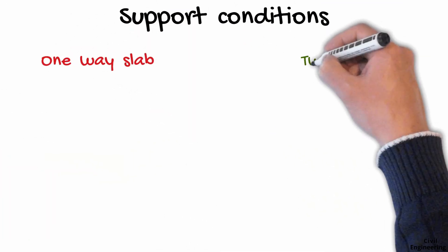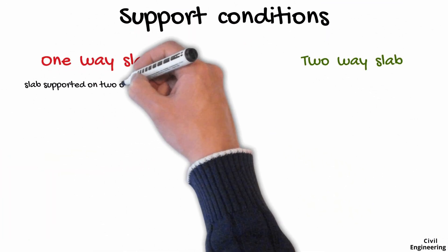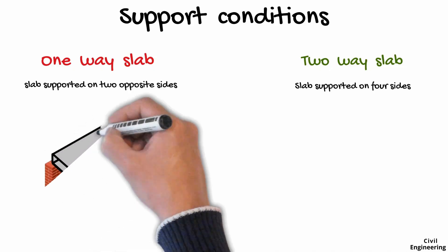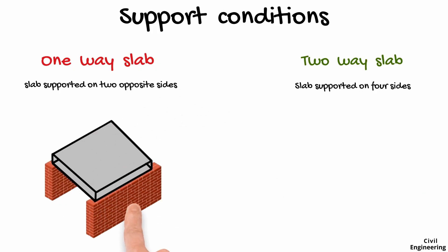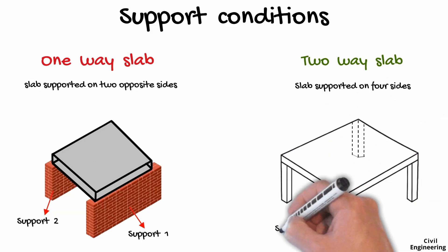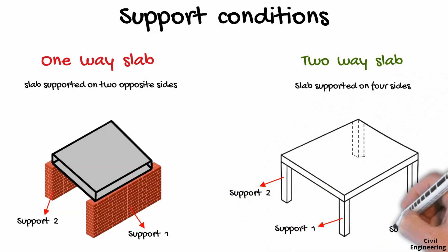Another key difference is the support conditions. A one-way slab is supported on just two opposite sides, so the load flows only between those two supports. In contrast, a two-way slab is supported on all four sides, allowing the load to distribute in both directions. In the one-way slab example, the slab rests on support 1 and support 2 — two opposite supports. In the two-way slab example, the slab has four supporting edges, which is why it behaves as a two-way slab.